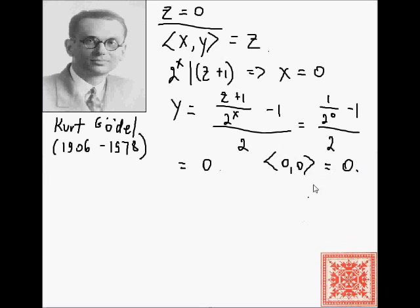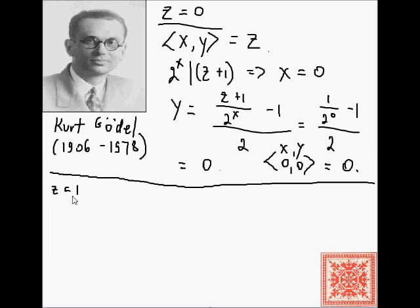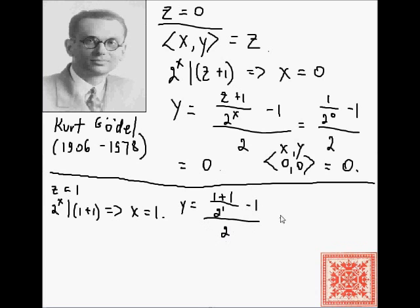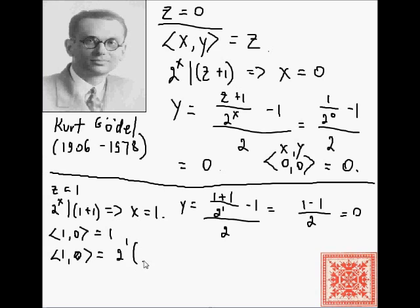Now take z = 1. We're looking for the maximum x such that 2^x divides 1+1 = 2, so x = 1. Then y = (2 / 2^1 − 1) / 2 = (1 − 1) / 2 = 0. So the pair is x = 1, y = 0, which maps to 1. We can verify: the pair of (1, 0) = 2^1 times (2·0 + 1) dot-minus 1 = 2·1 − 1 = 1. ✓